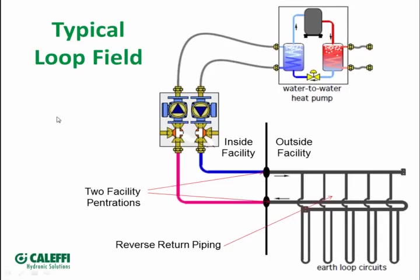Here's a typical loop field schematic. Everything to the right of this line is what's out in the ground, wells, or a pond or lake. Once you come through this line, that's the stuff inside the building — the heat pump and pump station moving the fluid out through the loops. This method allows you to penetrate the building with only two penetrations through the wall because you connect all your loops outside in a manifold or vault. It's a reverse return piping arrangement where the first loop that gets supply is the last one returned, so the loops self-balance. The pump station inside is sometimes a push-and-pull configuration with two pumps.